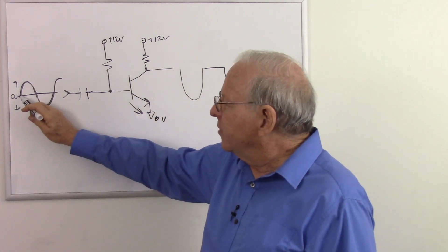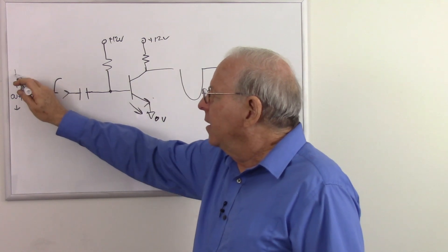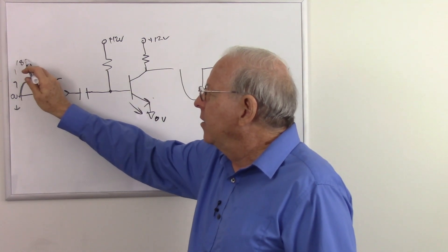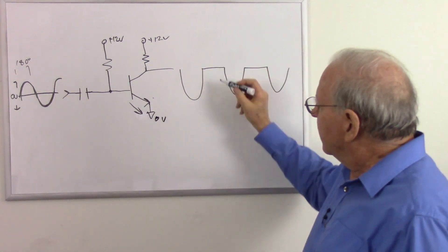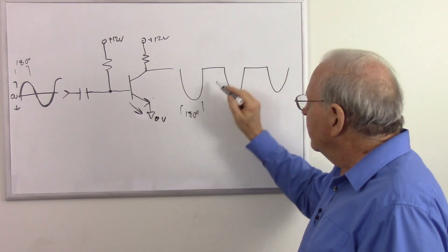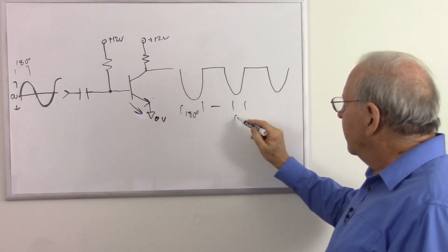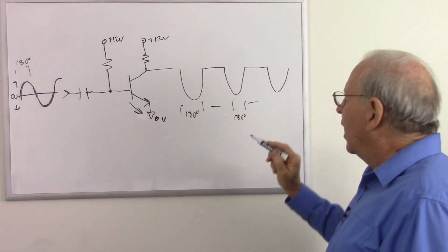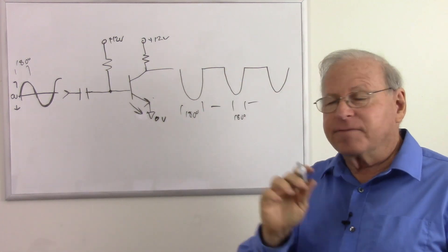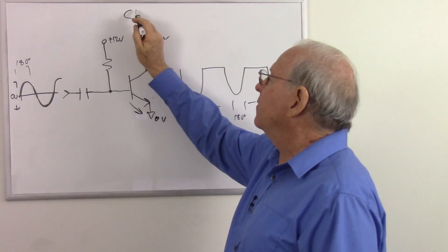And we will have an output that looks something like that. So we have 360 degrees at the input, but only 180 degrees are actually being amplified. So 180 degrees, nada. 180 degrees, nada. So it's only amplifying half of that input, or 180 degrees. And this is called a Class B amplifier.